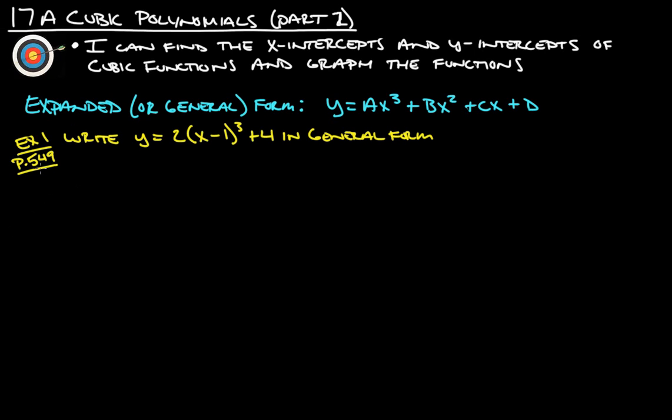Next example, example 1 from page 549, where it has us writing y equals 2 times x minus 1 to the 3rd plus 4 in general form. This here is the general form. So basically, we have our ax cubed plus bx squared plus cx plus d. So what we have to do is we have to expand this out, which basically means we have to do x minus 1 times x minus 1 times x minus 1, multiply it all by 2, add 4.